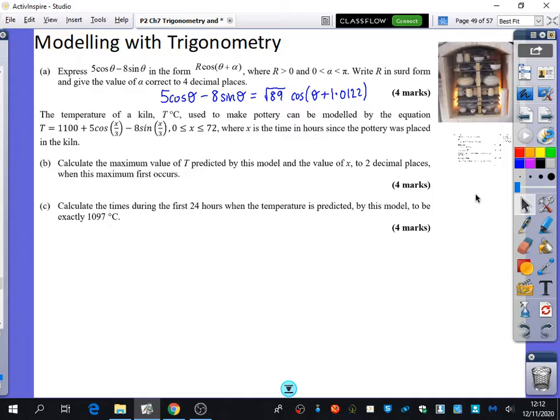This is where it becomes a modeling with trigonometry question. It says that the temperature of a kiln, T degrees centigrade, used to make pottery can be modeled by the equation T = 1100 + 5 cos(x/3) - 8 sin(x/3), where x is between 0 and 72, and x is the time in hours since the pottery was placed in the kiln. First of all, what is a kiln? It's an oven. This picture here is of a pottery kiln. We're putting some clay into an oven and thinking about how it behaves inside that oven.